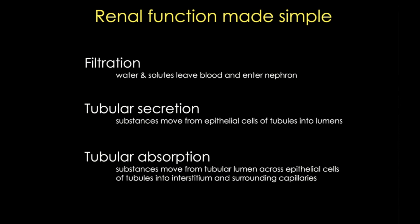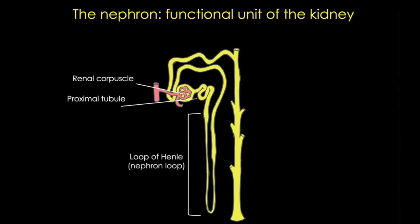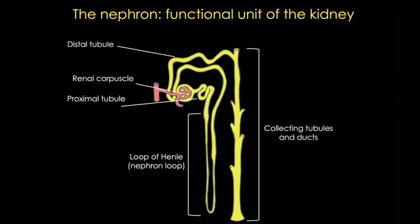The functional unit that performs all of these jobs is called the nephron. The nephron is a corpuscle always located in the cortex that filters the blood, followed by a long tubule with several main parts: the proximal tubule with a convoluted part in the cortex and a short straight part that enters the medulla; the nephron loop or loop of Henle; and the distal tubule that ascends back up to the cortex, then collecting tubules and ducts which merge into the minor calyces.